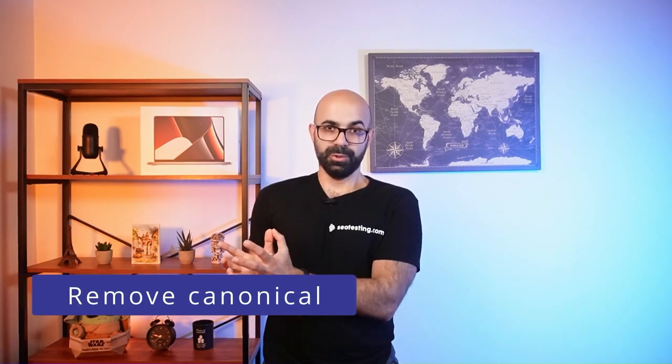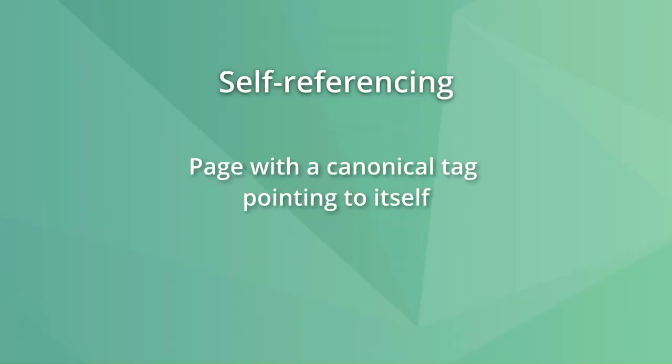When a page has a canonical tag pointing to a different URL, it is communicating that another page is the main content version that should rank on Google. But if this was a mistake and you want the page to appear on Google, you should remove the canonical tag — or better yet, use a self-referencing canonical telling Google that the page is indeed the original.